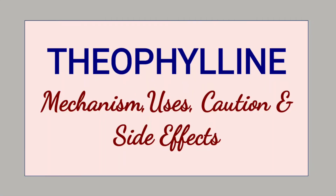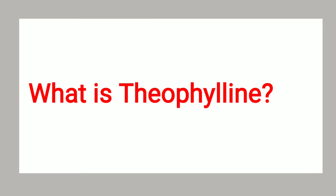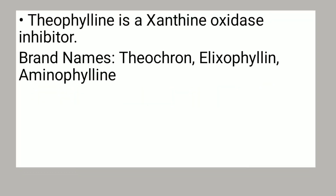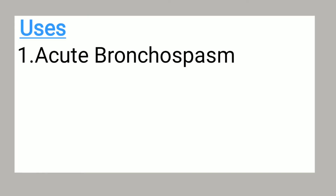Hi everyone, welcome to my channel. We're going to look at theophylline — its mechanism, uses, cautions, and side effects. Theophylline is a xanthine derivative available under brand names such as Theochron, Helix, and Aminophylline, among many others. It is used in acute bronchospasm.